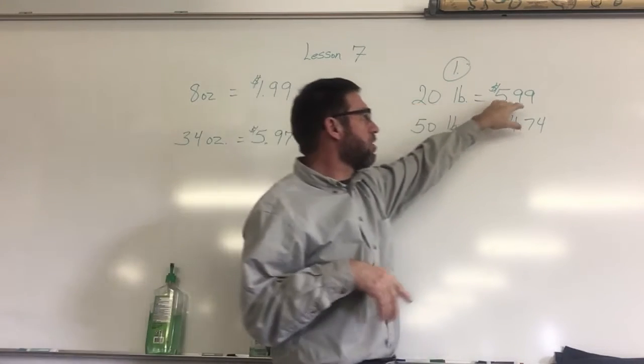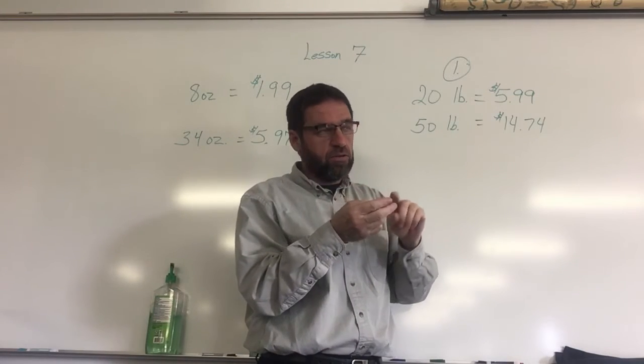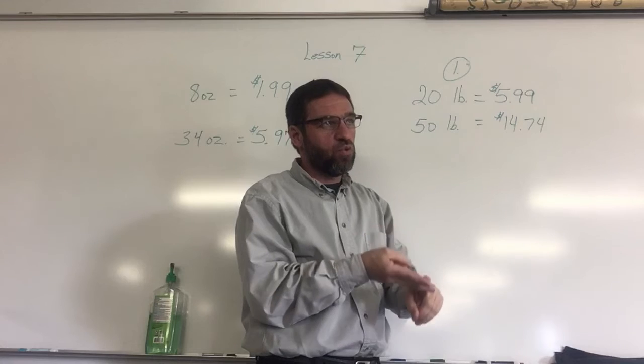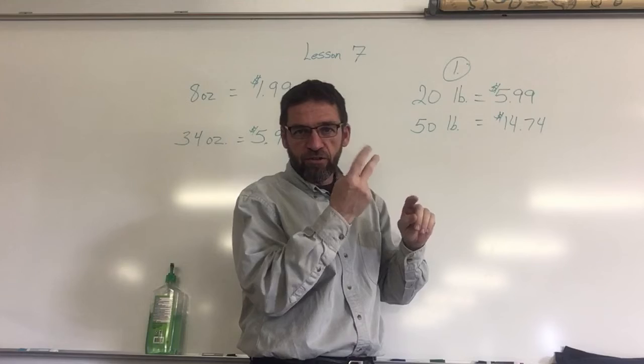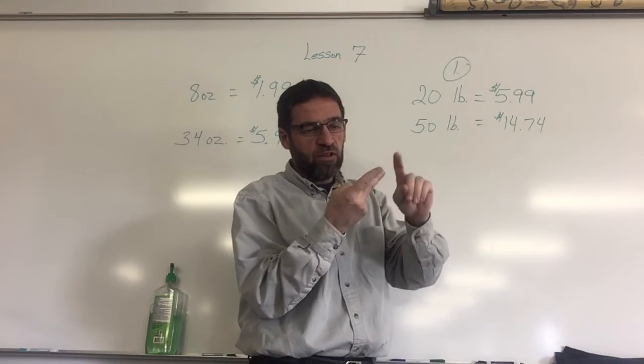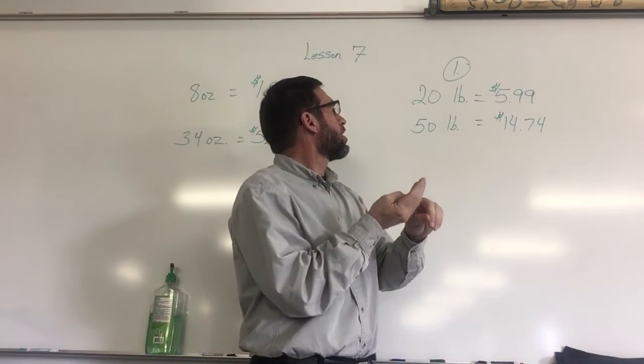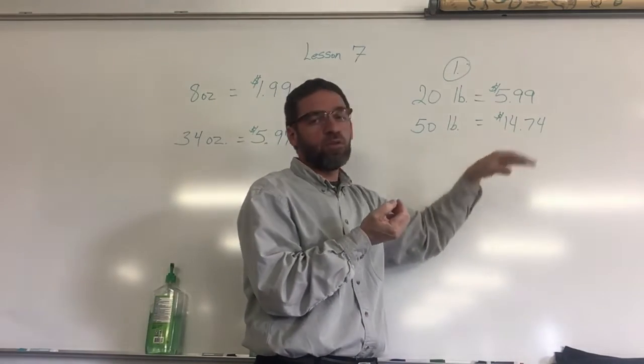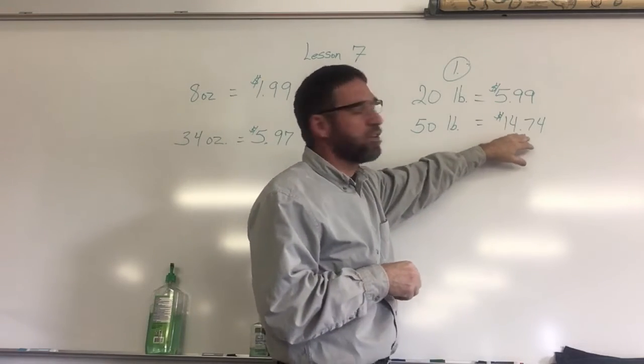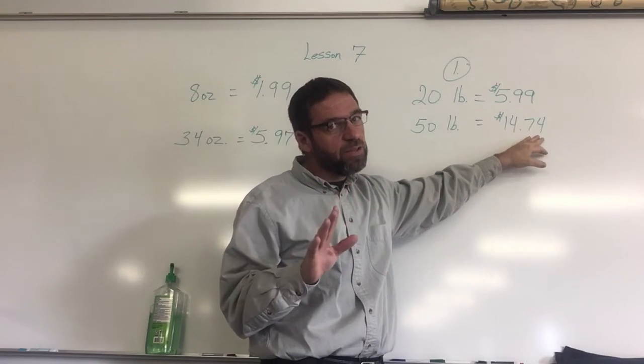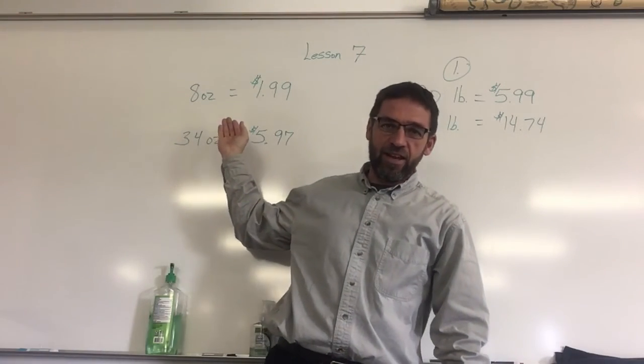So now you've got $6 times 2.5. Six times two is twelve, and a half of six is three. So you got twelve, thirteen, fourteen, fifteen dollars. Oh, if I use this price the 50 pound bag would cost me $15 and it only cost me $14.74.